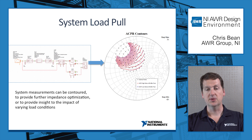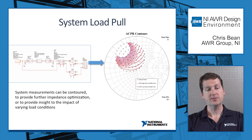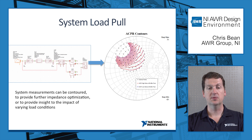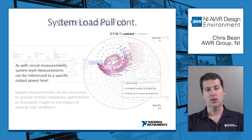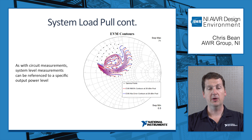Here we're plotting ACPR contours for this device, and it's just the same as essentially using circuit level load pull. System measurements can be contoured, and that gives you information on how the device operates under a real-world signal. System level measurements can be referenced to a specific output power level or any other measurement you have — it doesn't have to be just a function of the input power.